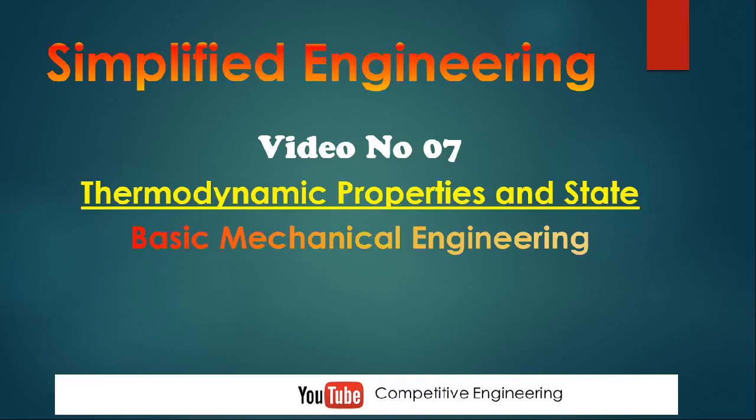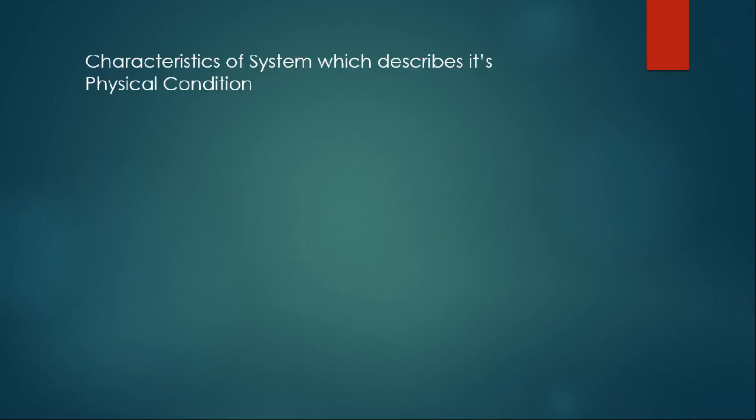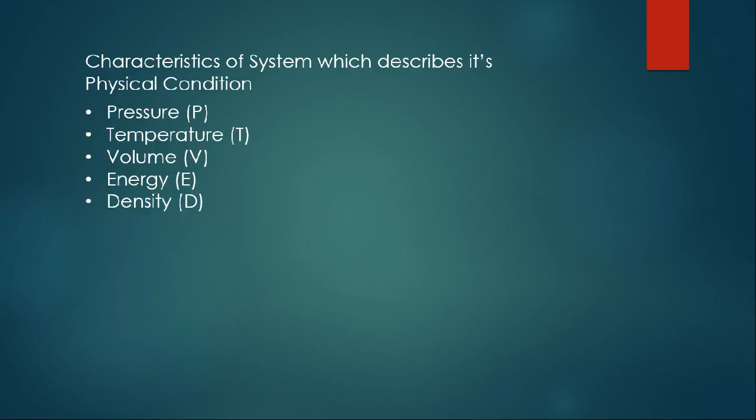Welcome to Simplified Engineering. This is video lecture number seven and the topic is thermodynamic properties and state. Characteristics of a system which describe its physical condition are called properties. To describe the physical condition of a system we have to mention things like pressure, temperature, volume, energy, and density — for example, pressure is P1, temperature is T1, and volume is V1.